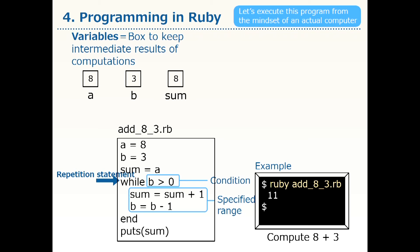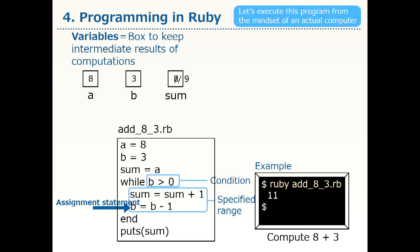Next is a repetition statement. The condition is to repeat if B is greater than 0. Looking at B, its current value is 3, so the condition is met. The current value of SUM is 8, so SUM plus 1 is 9, and the value of SUM is overwritten with 9. The value of B is 3, so B minus 1 is 2, and 2 is stored in variable B, overwriting it. The specified range up to the end has finished, so we return to the top and check the condition again.